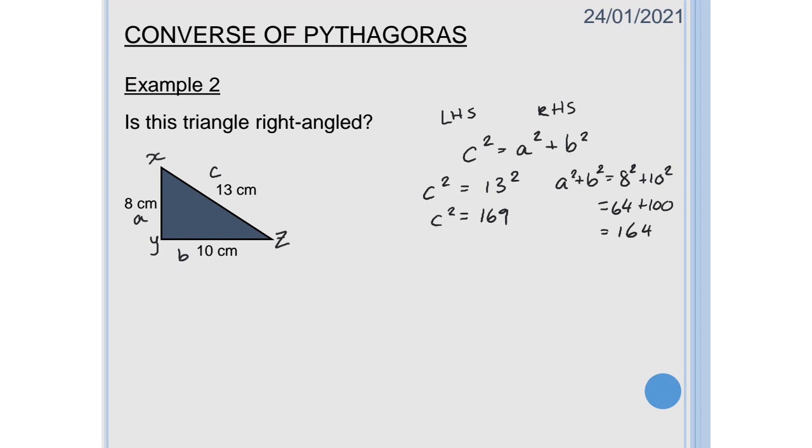In this case C squared is different from A squared plus B squared which tells me instantly that the triangle is not right angled and again once I've got that answer once I've got my proof I need to write a statement